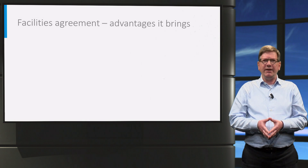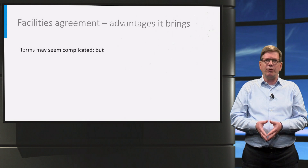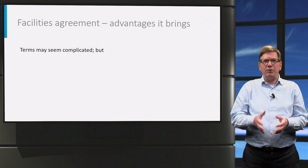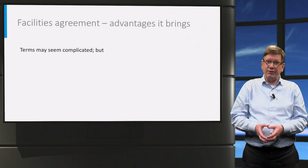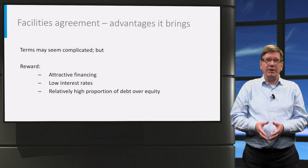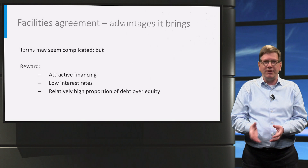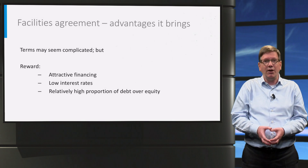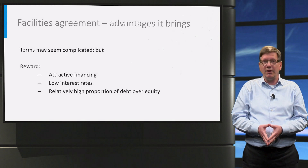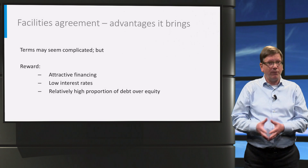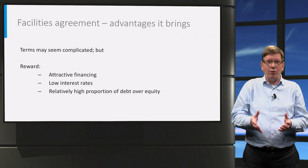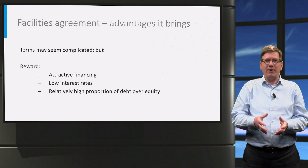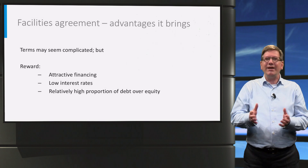All in all, these are quite complicated provisions that are favourable for the project lenders and often rather cumbersome for the project company. Lenders have a tendency to get involved in construction and operational issues much more in project finance. But the project company is normally rewarded for bearing with their demands by relatively cheap funding and often at relatively high proportions of debt over equity. Loans of well over 70% of the total investments are quite common in project finance. The favourable loan terms in a facilities agreement are only possible because of all the risk mitigation measures that have been applied for the lender. Thanks again for listening and see you soon.